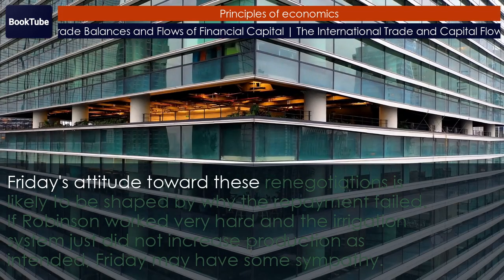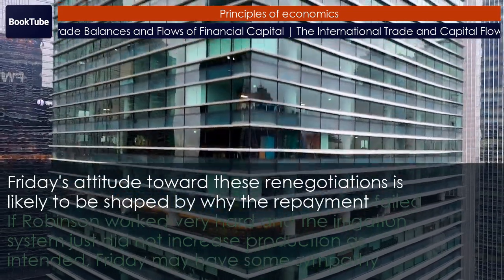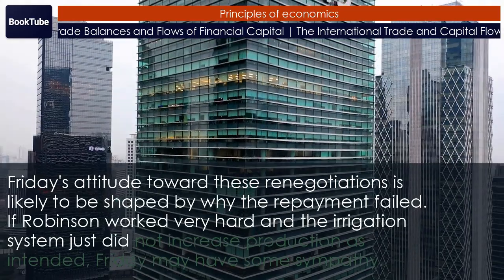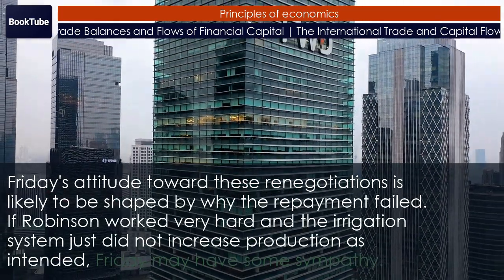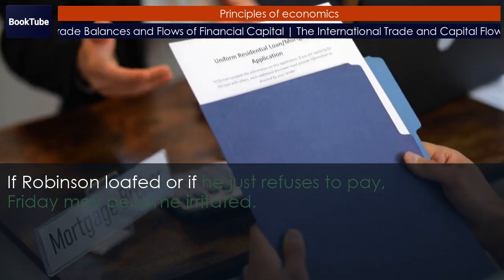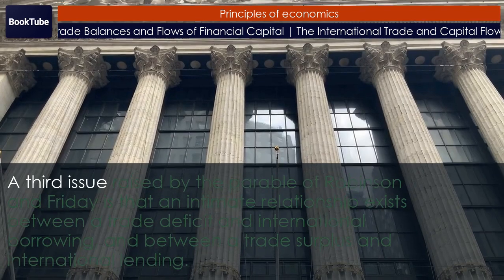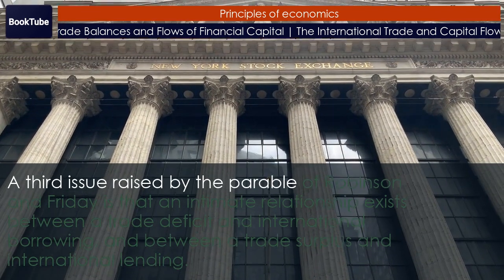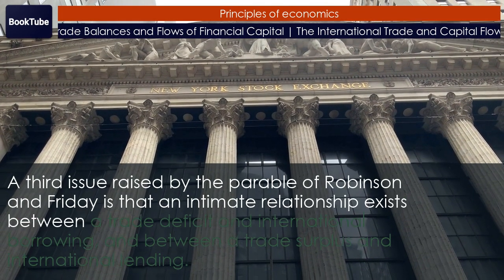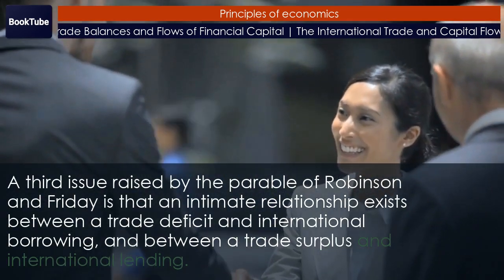Friday's attitude toward these renegotiations is likely to be shaped by why the repayment failed. If Robinson worked very hard and the irrigation system just did not increase production as intended, Friday may have some sympathy. If Robinson loafed or if he just refuses to pay, Friday may become irritated. A third issue raised by the parable of Robinson and Friday is that an intimate relationship exists between a trade deficit and international borrowing, and between a trade surplus and international lending.